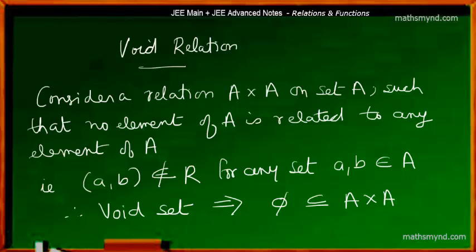Consider a Cartesian product on a set itself. What I mean is that consider a relation A times A on set A such that no element of A is related to any element of A. In a particular relation we deal with the ordered pairs, and in this case as a relation on the set itself, both the elements that is a and b would be coming from that set itself.